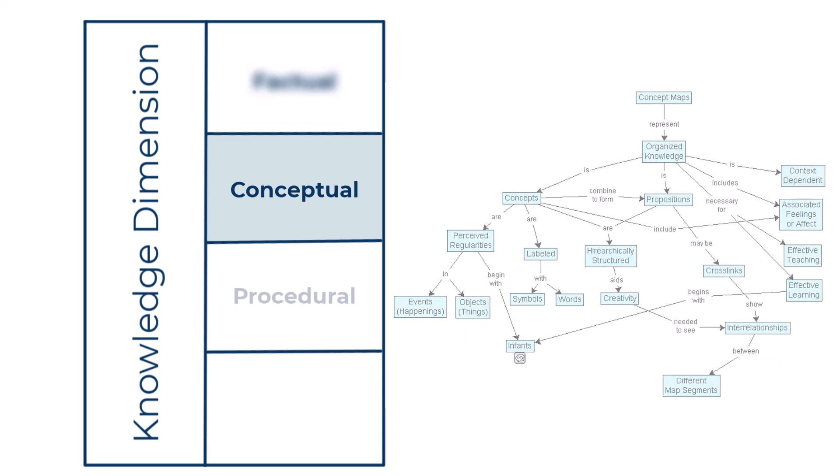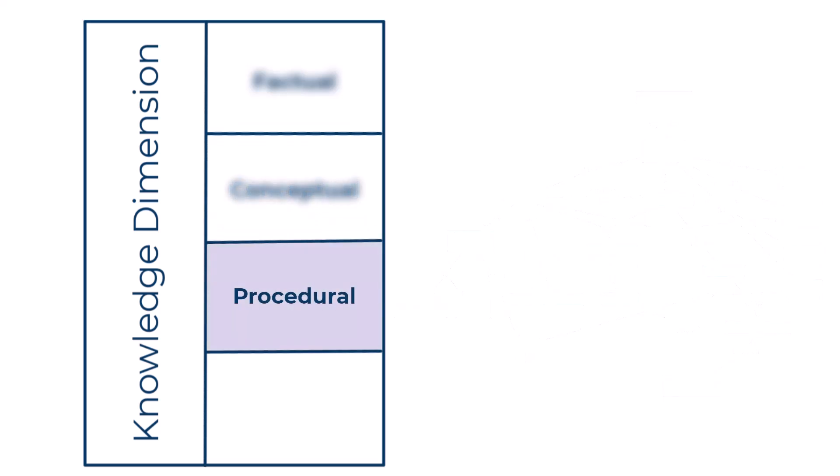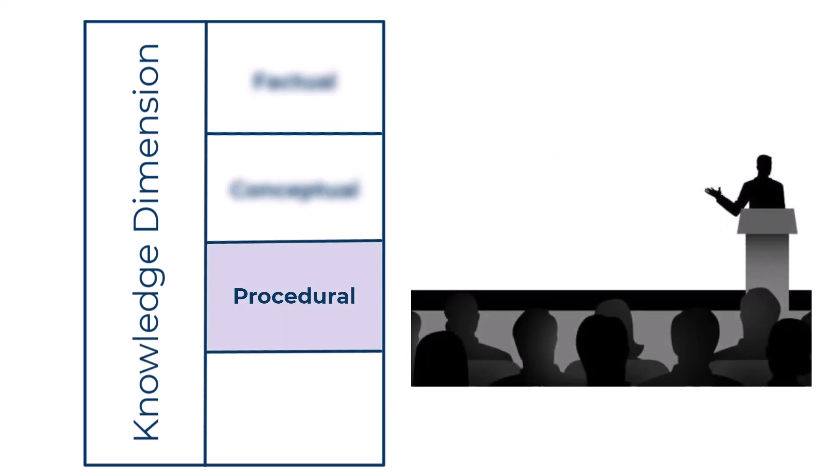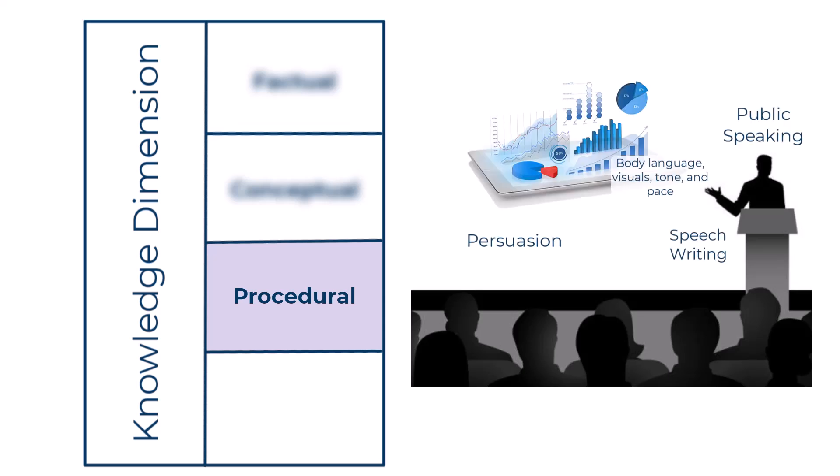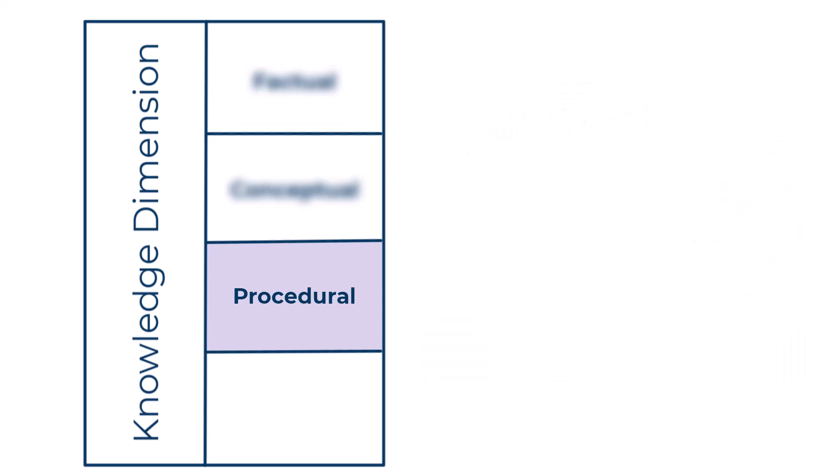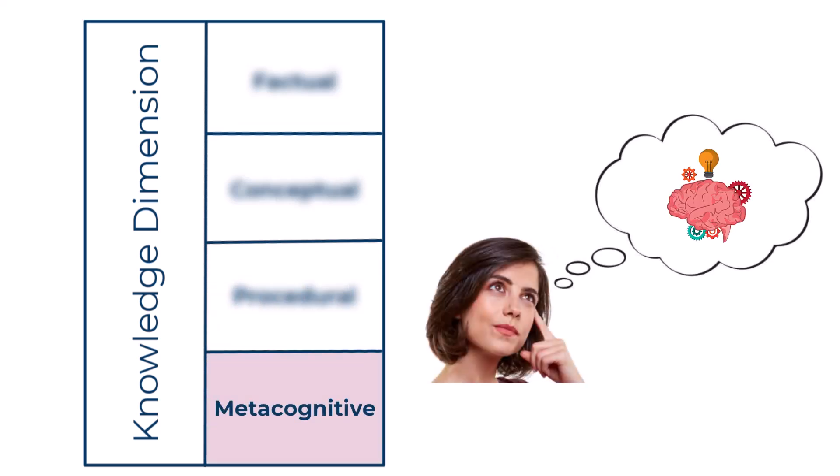The third type is procedural knowledge. And this involves how to do something, methods of inquiry, and criteria for using skills, algorithms, techniques, and methods. And the final type is metacognitive knowledge. This involves knowledge of thinking in general, as well as awareness and knowledge of one's own thinking.